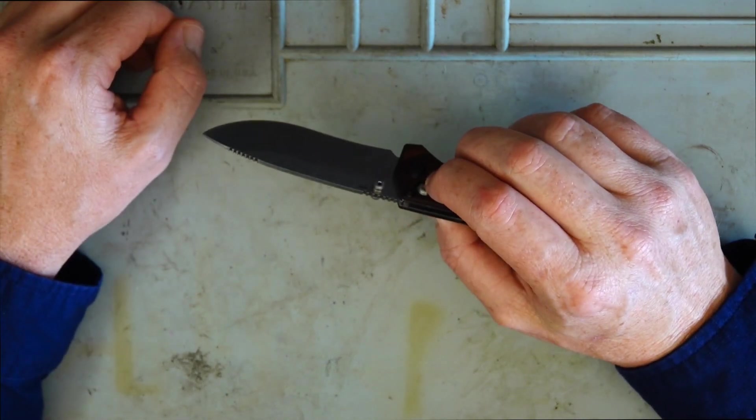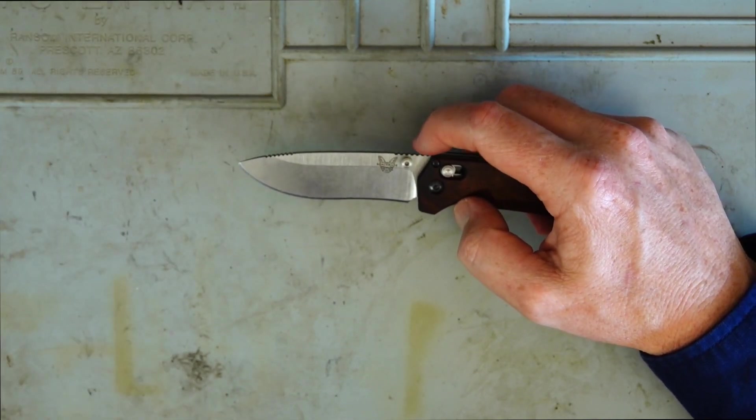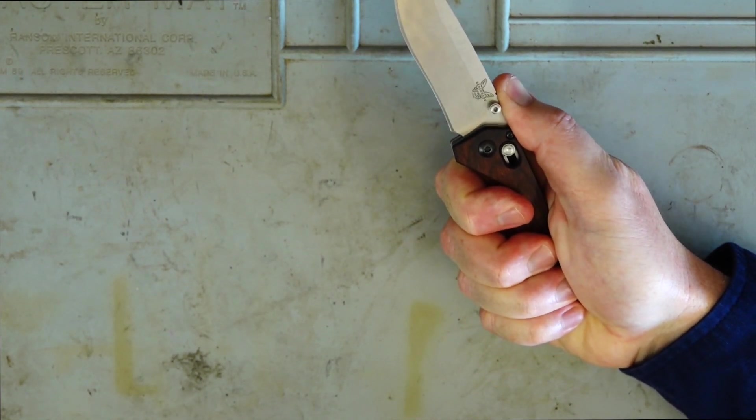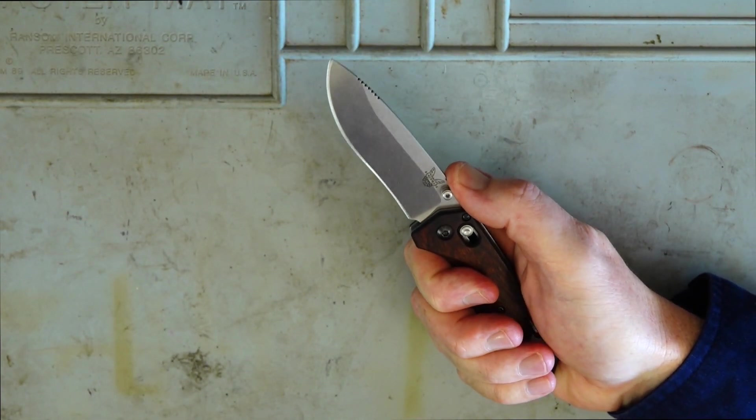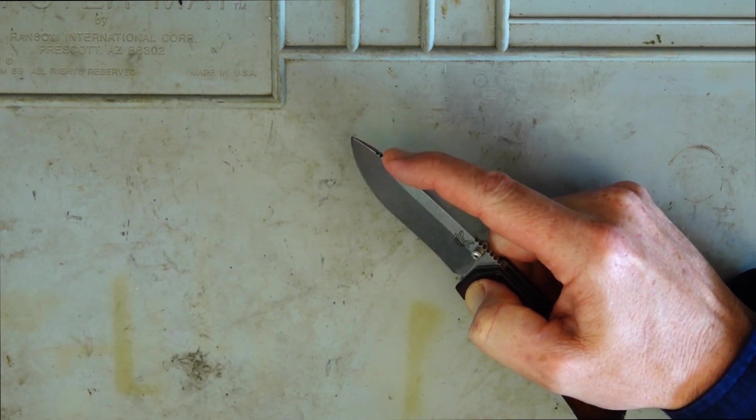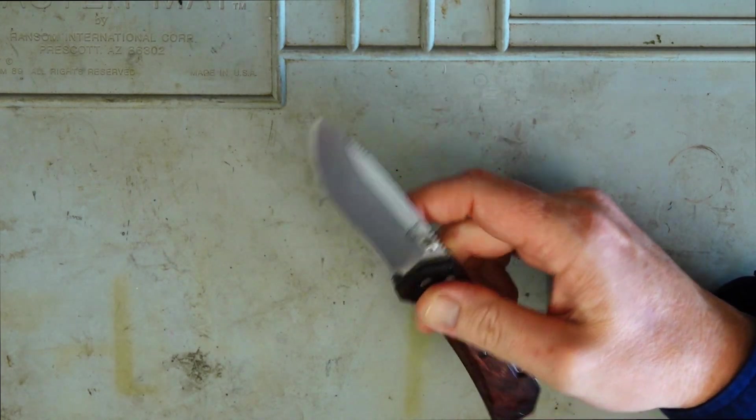We've got ambidextrous thumb studs here. We've also got jimping in two positions on the top of the blade. Obviously really good when you're holding it like so just to get a nice firm grip. And then if you want to do some finer skinning well obviously you've got some jimping at the front there that you can just do that finer cut with.